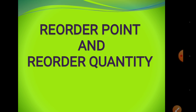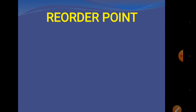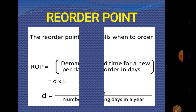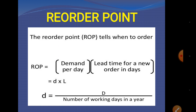Good morning. Today our topic is reorder point and reorder quantity. First, reorder point: the reorder point tells when to order. The reorder point is equal to demand per day multiplied by lead time for a new order in days. Demand per day is small d, lead time in days is L, and small d equals capital D (total demand) divided by number of working days in a year.